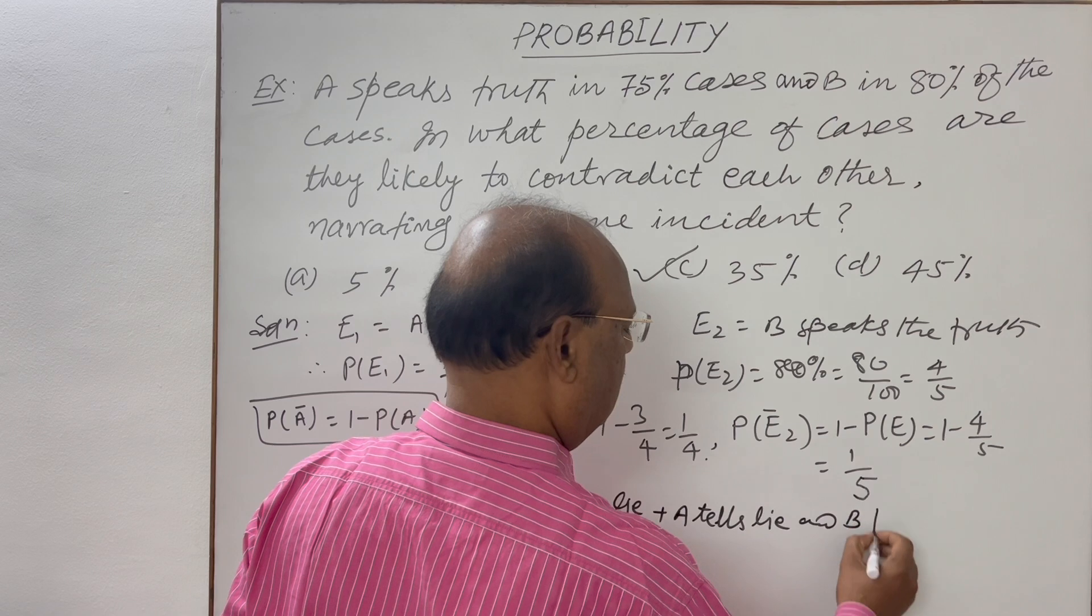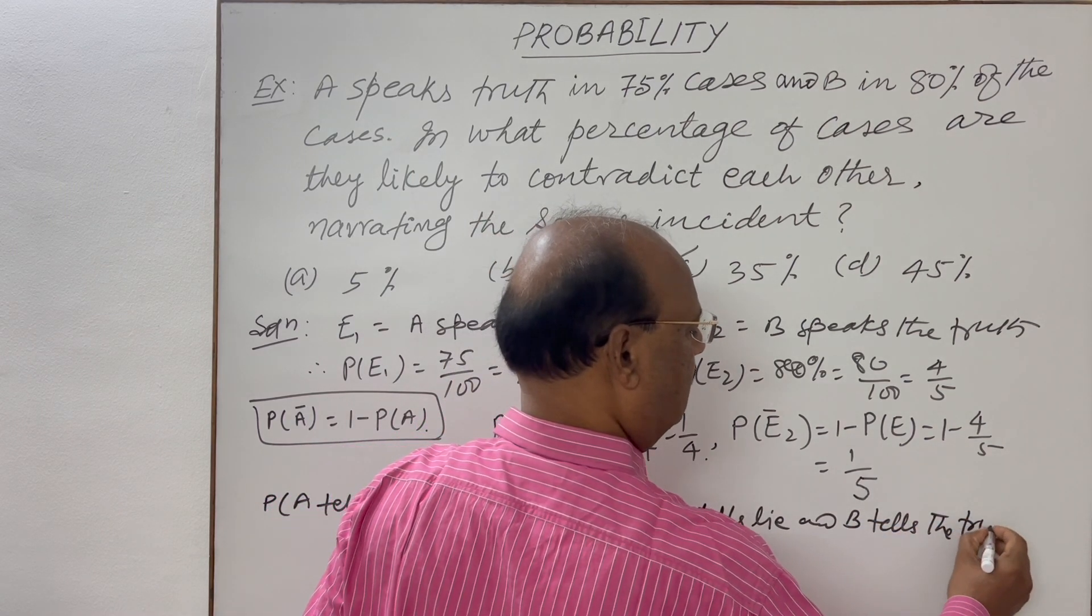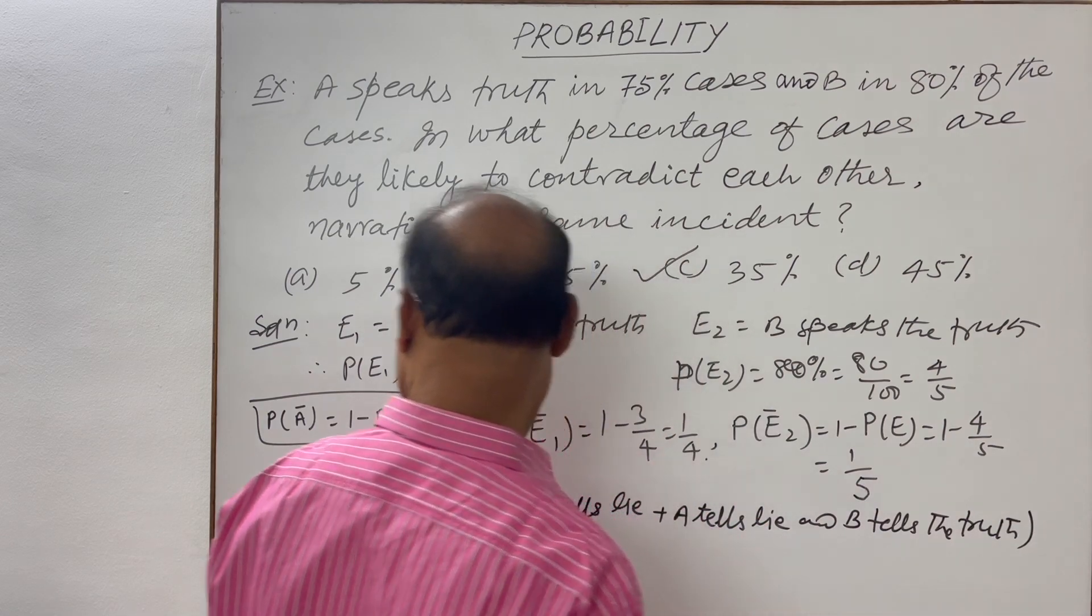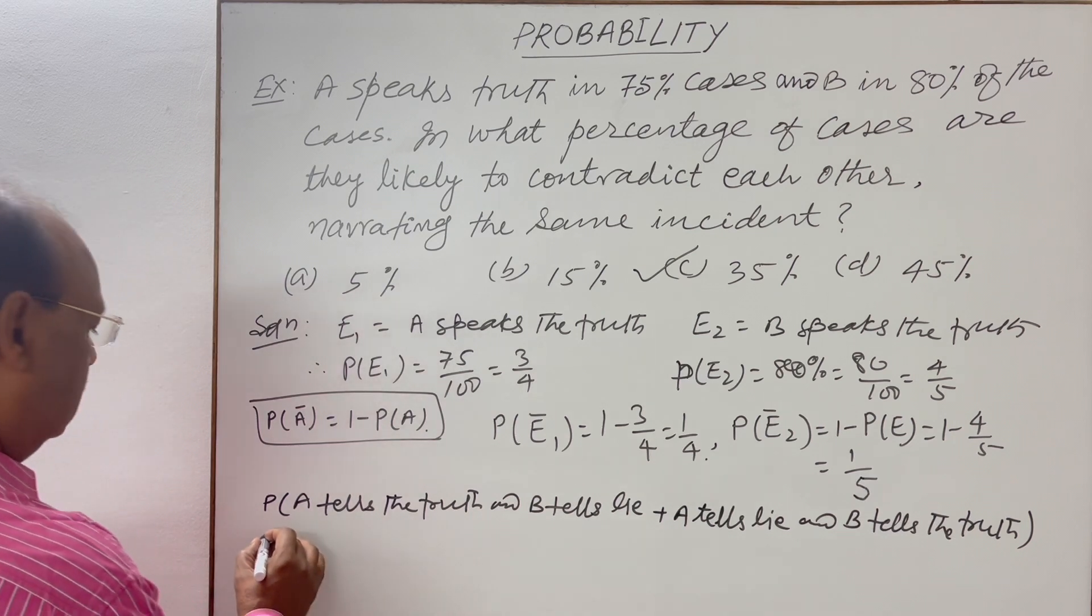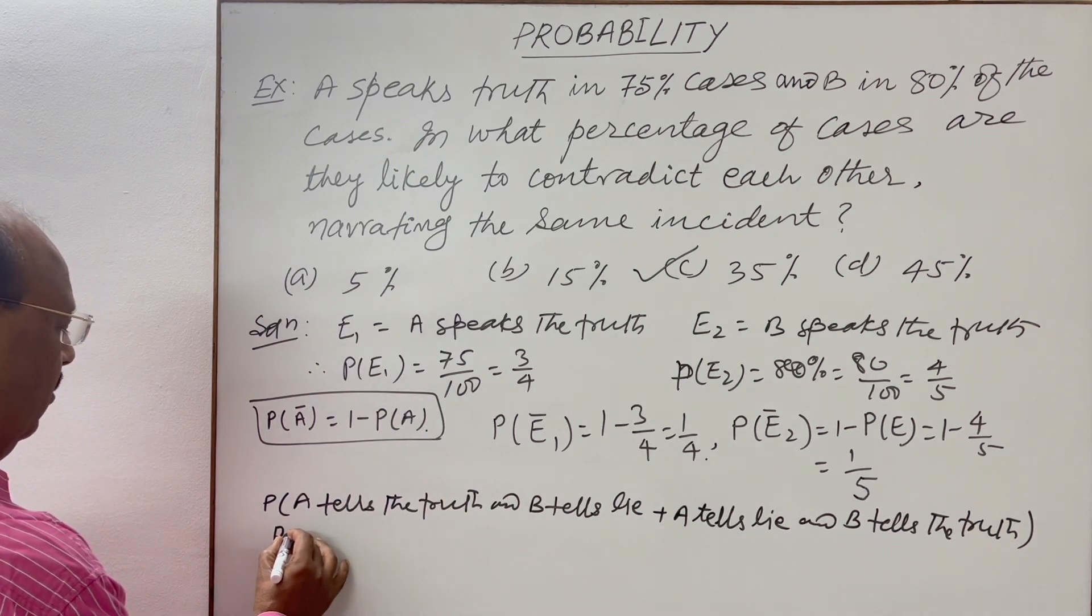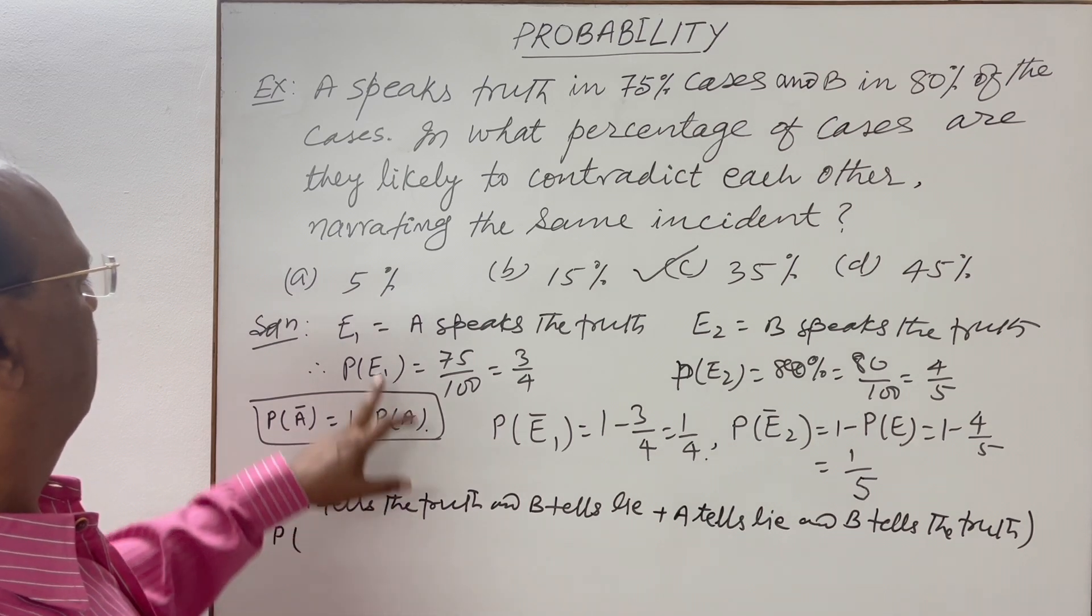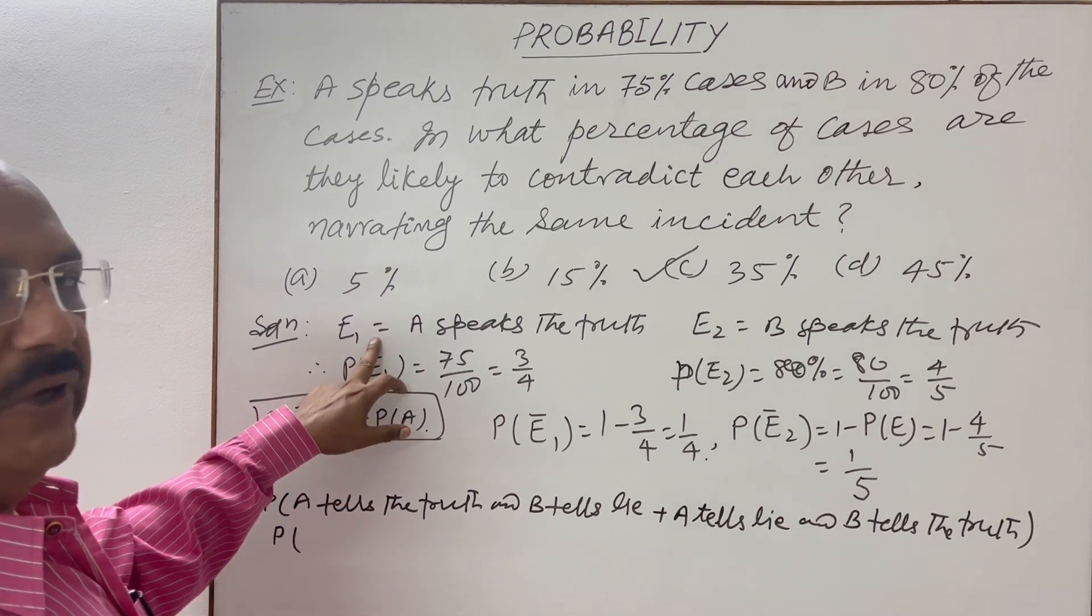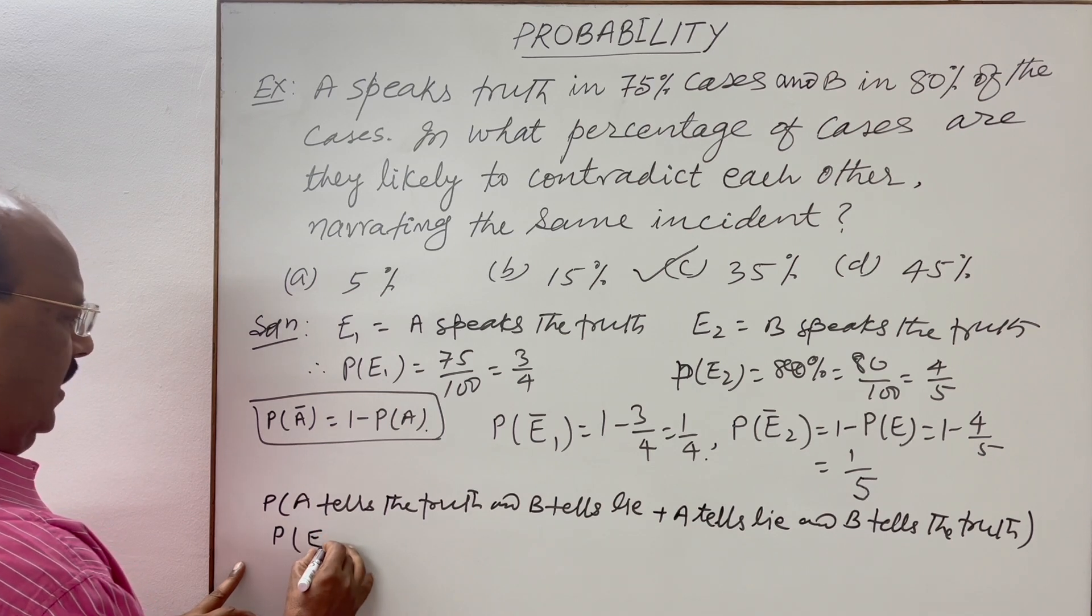So now we will find out A tells the truth. This is E₁. So we have to find out probability of E₁, and there will be multiplication.